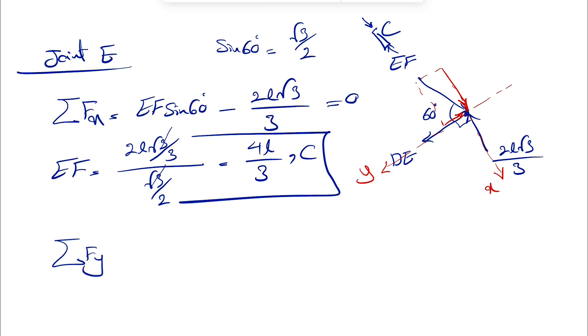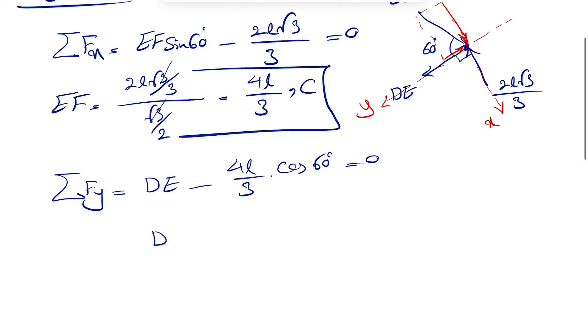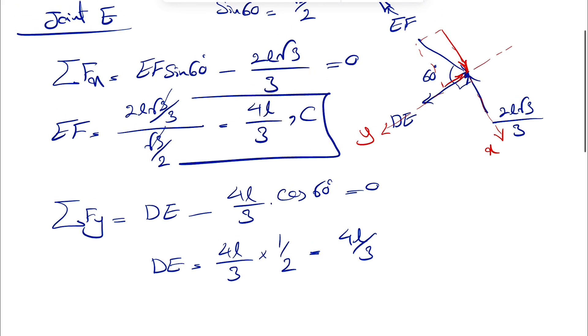And if we do sum of all forces in Y direction, this time we will have DE positive minus the Y component of EF, which is EF cosine of 60. We found EF 4L over 3 cosine of 60 degrees equals 0. And DE would be 4L over 3 cosine of 60 is 1 half, same value as sine of 30.